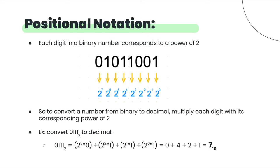One more thing about binary: if we want to convert a binary number to a decimal number, we can use positional notation. Each digit of the binary number corresponds to a power of two, with the rightmost being 2⁰, then 2¹, 2², 2³, and so on. For example, to convert 0111: the leftmost digit is 0 times 2³, plus 1 times 2², plus 1 times 2¹, plus 1 times 2⁰. When you add those up, you get your decimal number.